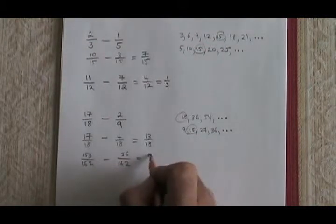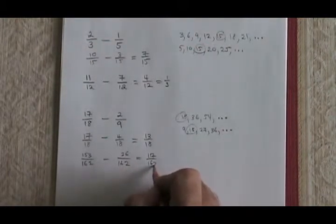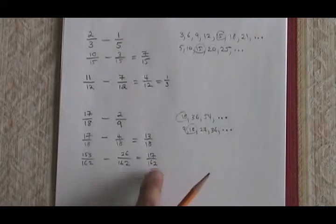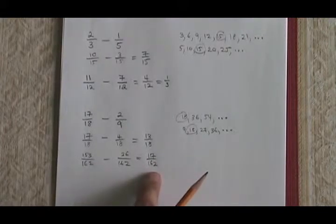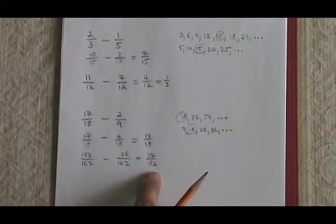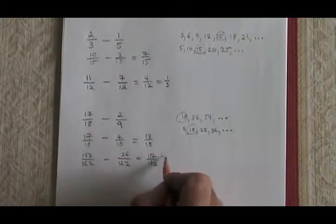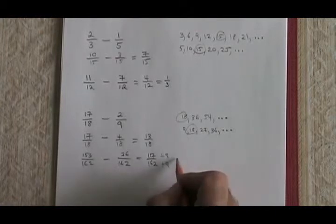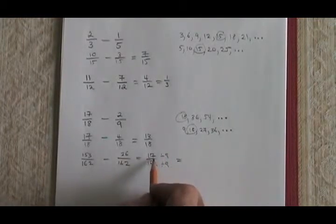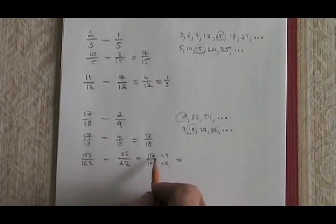If we subtract 153 over 162 minus 36 over 162, we get 117 over 162. Can this fraction be reduced? These two numbers have a common factor of 9.